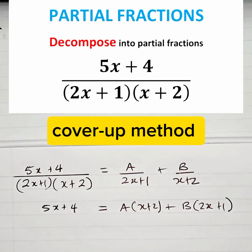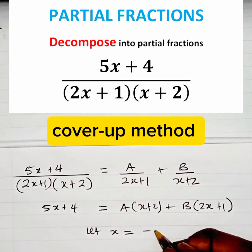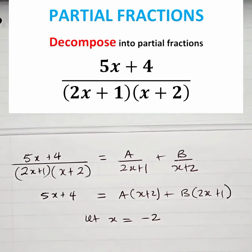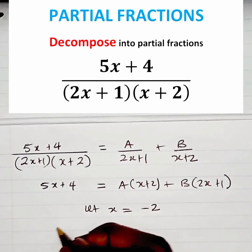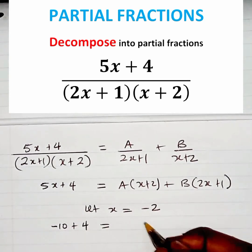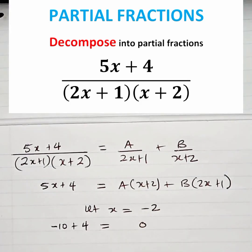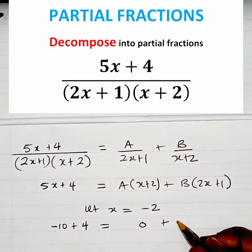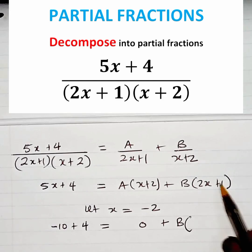As far as that method is concerned, we are going to eliminate each term. In this case, we can eliminate A by letting x equal to minus 2. If we let x equal to minus 2, we are going to get minus 10 plus 4 on the left-hand side. We get a 0 on the A term, because minus 2 plus 2 is 0. Then we have plus B times (minus 4 plus 1).